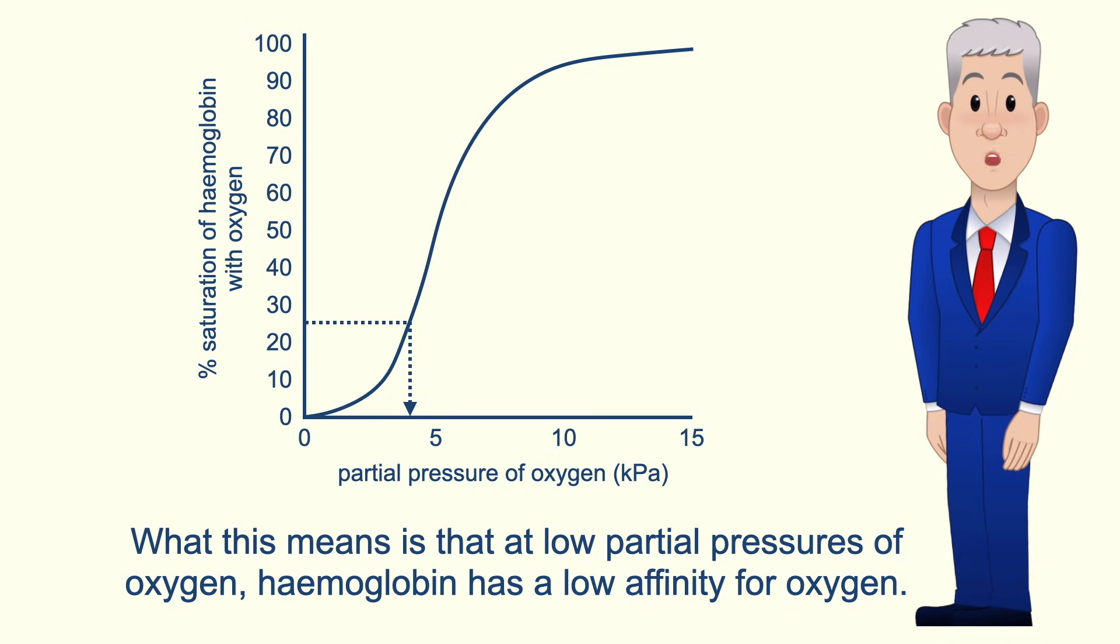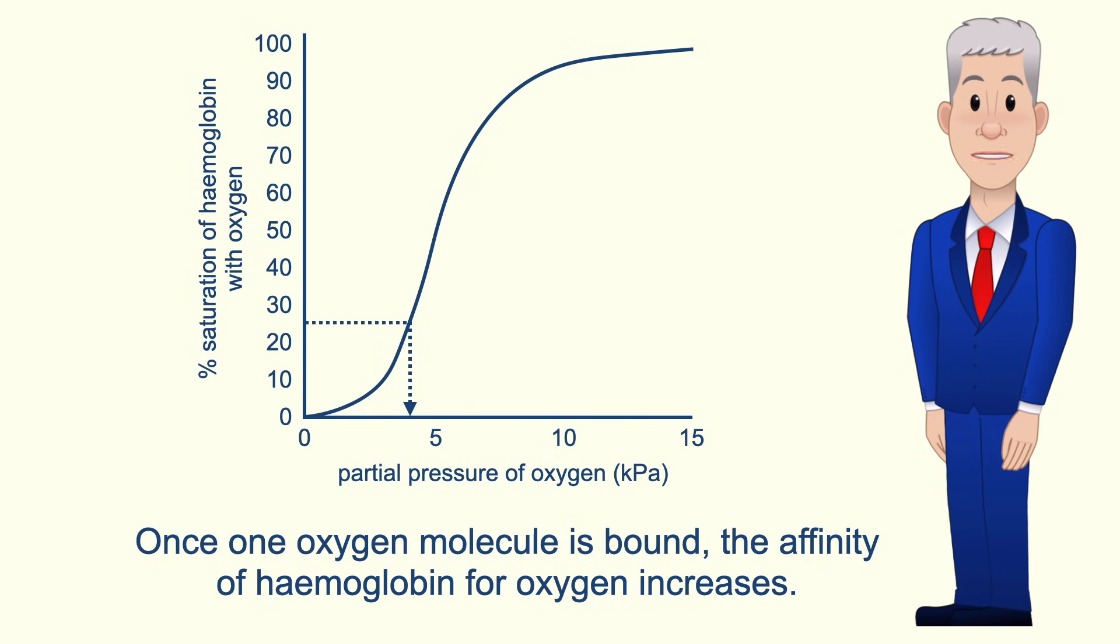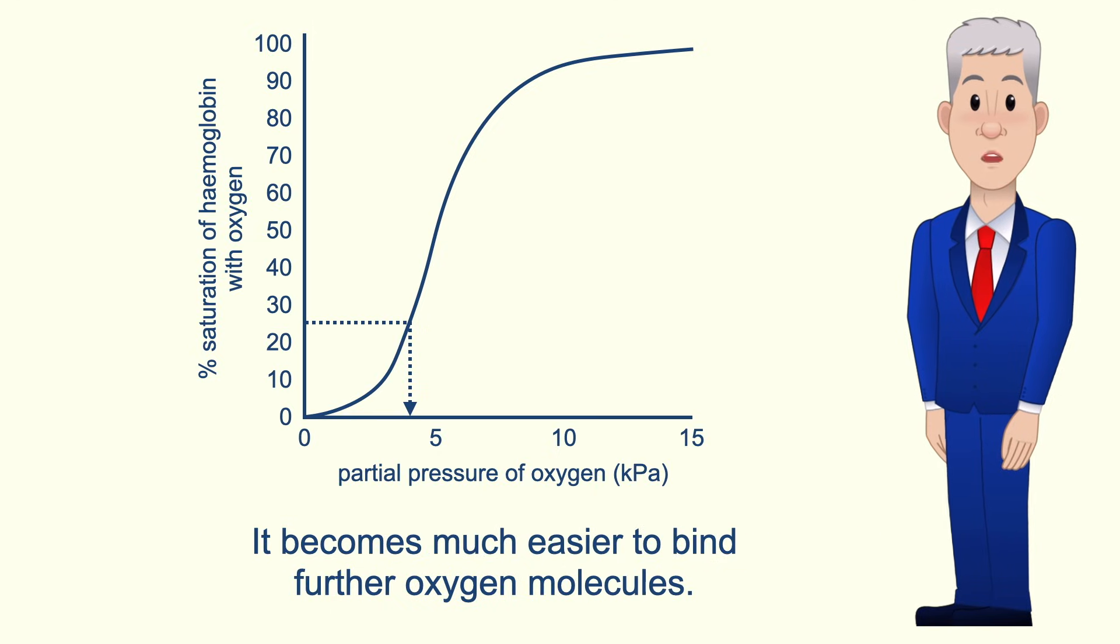So what this means is that at low partial pressures of oxygen, haemoglobin has a low affinity for oxygen, and the word affinity means how strongly the oxygen is bound to the haemoglobin. Now once one oxygen molecule is bound, the affinity of haemoglobin for oxygen increases and it becomes much easier to bind further oxygen molecules.